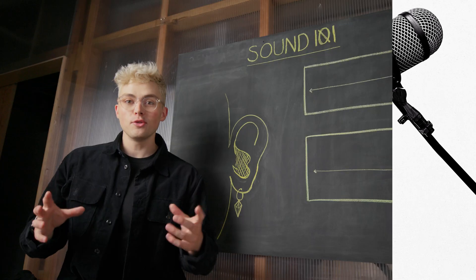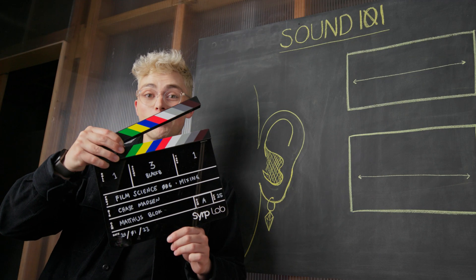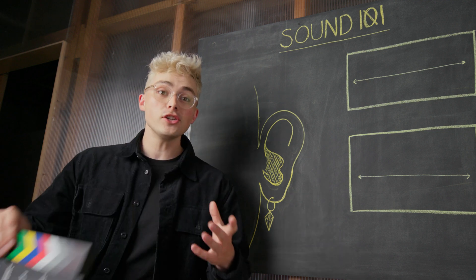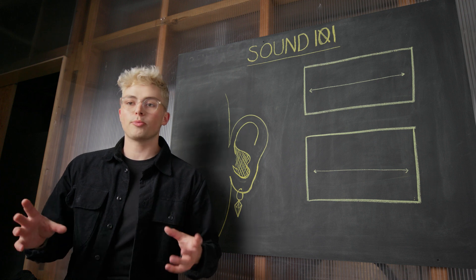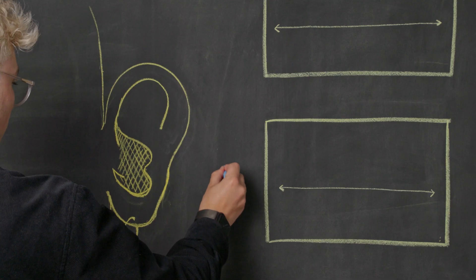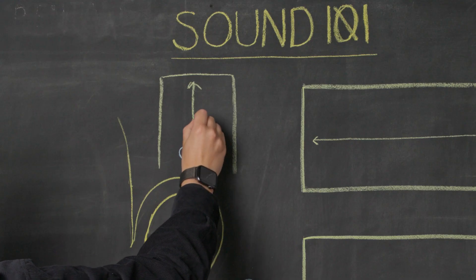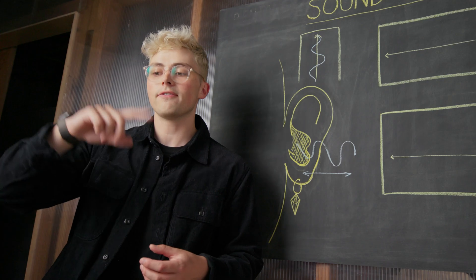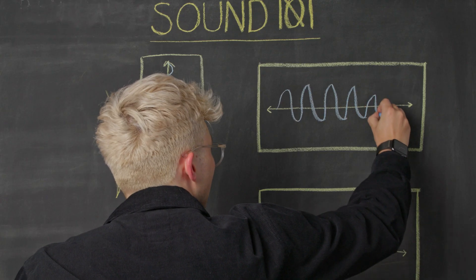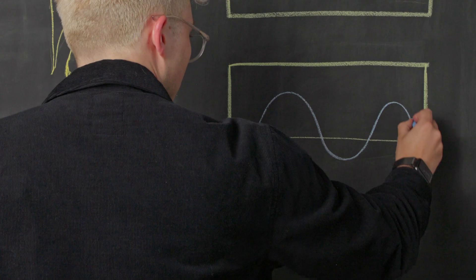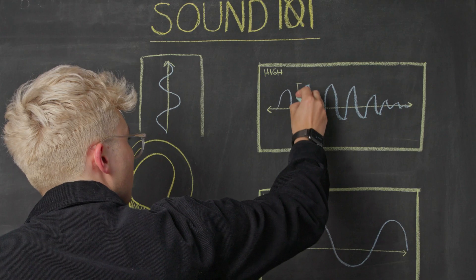Sound is our human interpretation of vibrations in the air. An object such as a clapperboard is closed, and the energy of the movement creates a pressure wave in the air around it. That wave or change of pressure is picked up by our ears as sound. We draw this as an up and down, but it's actually an in and out motion, where the frequency of the oscillations — or how fast and slow the pressure of that wave is increasing and decreasing — is how high or low pitch something sounds. The amplitude, or how strong that pressure wave is, is how loud something is.